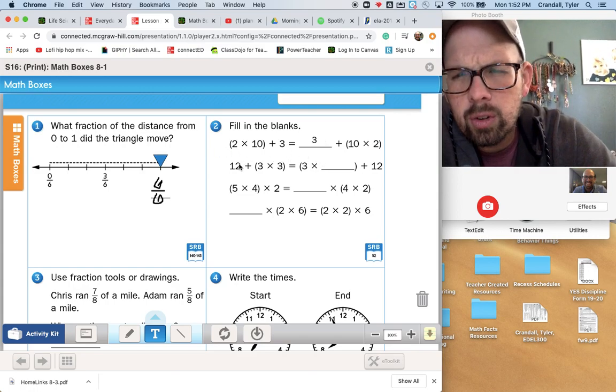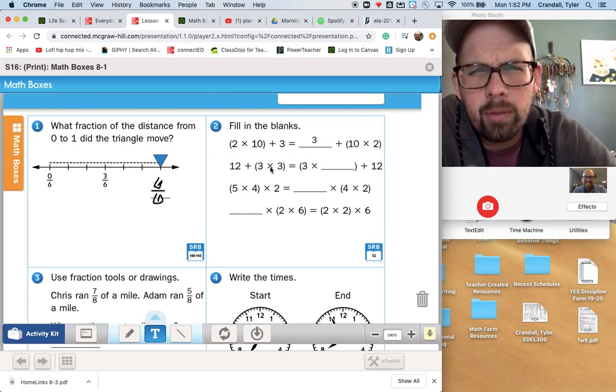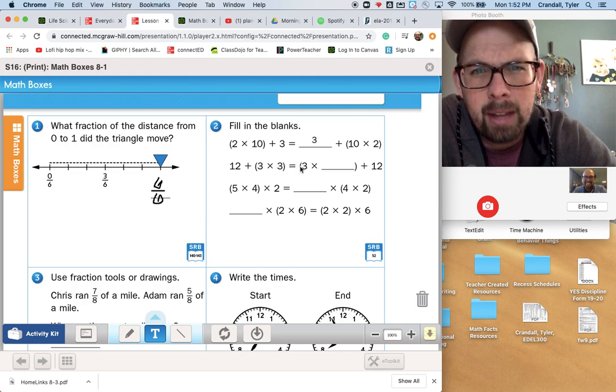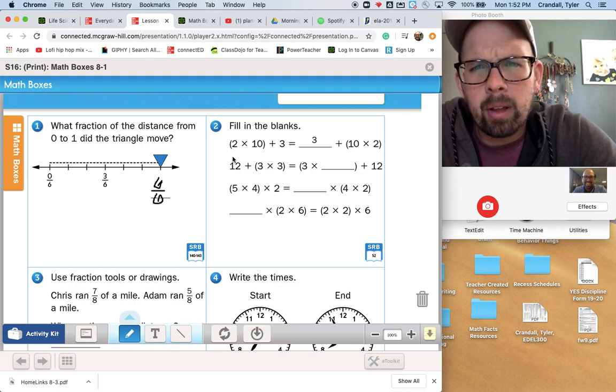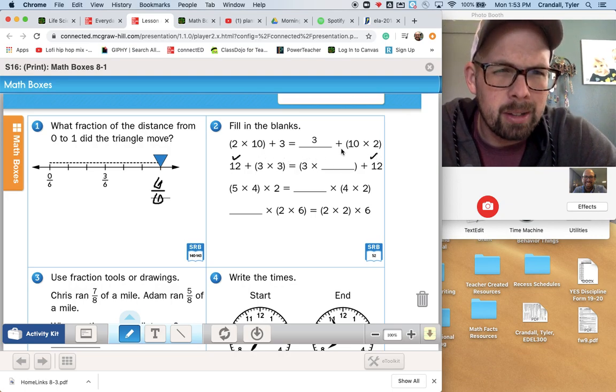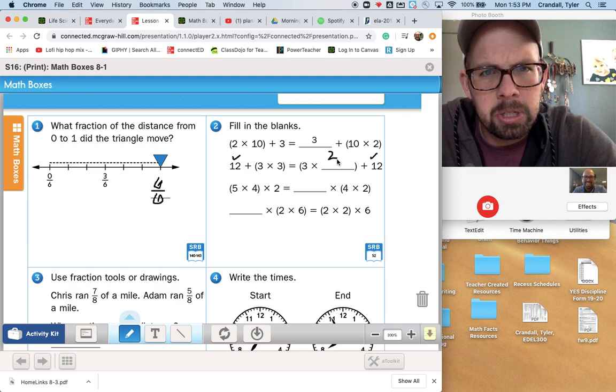This one says 12 plus the product of 3 times 3 is the same thing as 3 times something plus 12. I see a plus 12 here, and I see a plus 12 here. I see a 3 times 3 here, and a 3 times something. So what's missing? Just another 3.